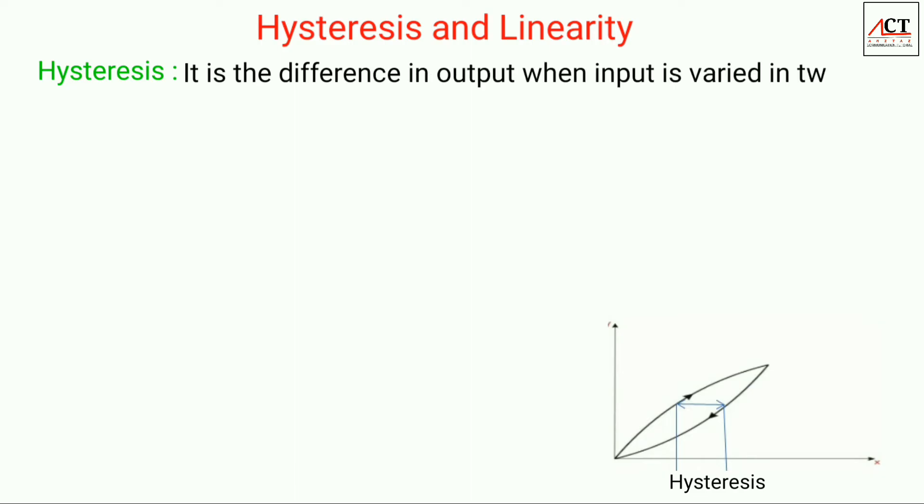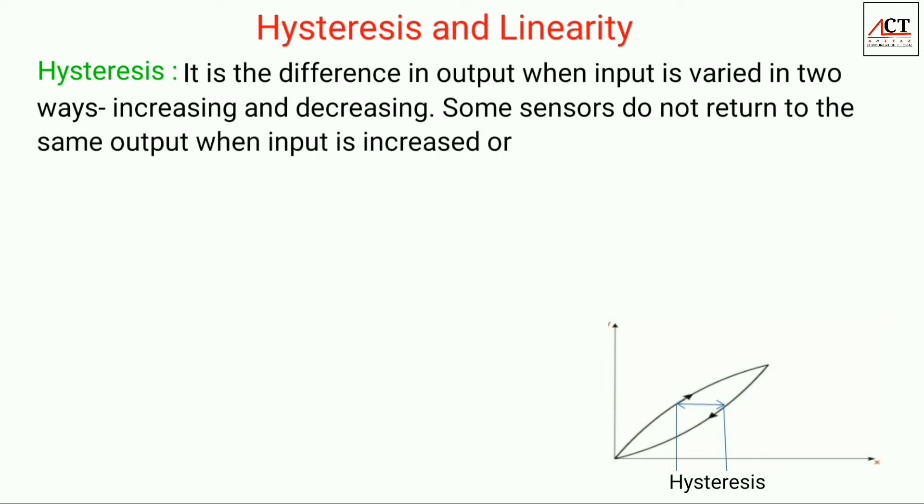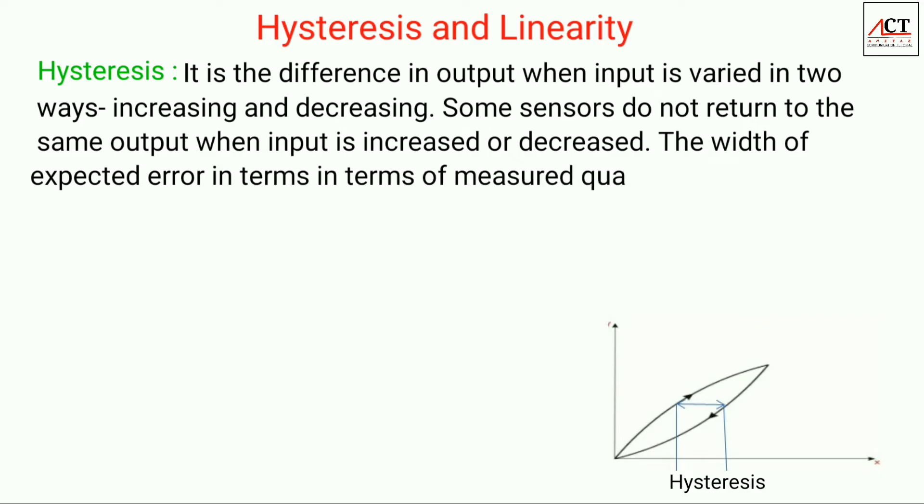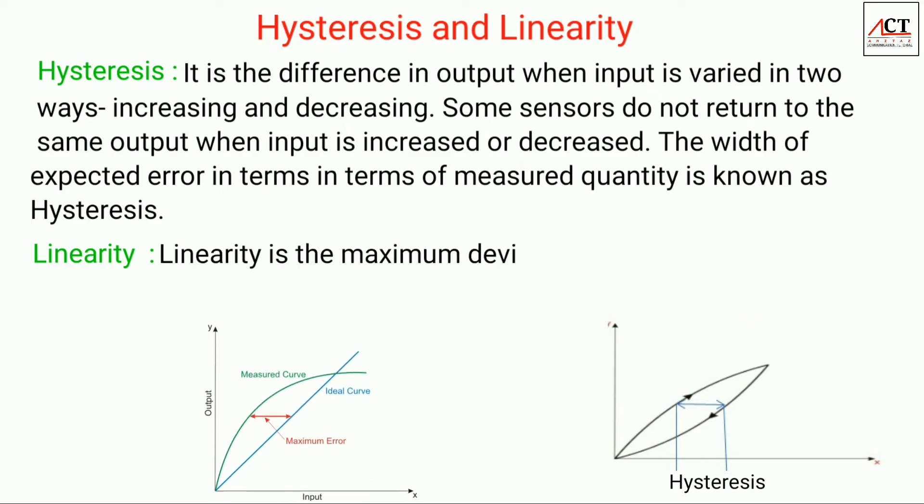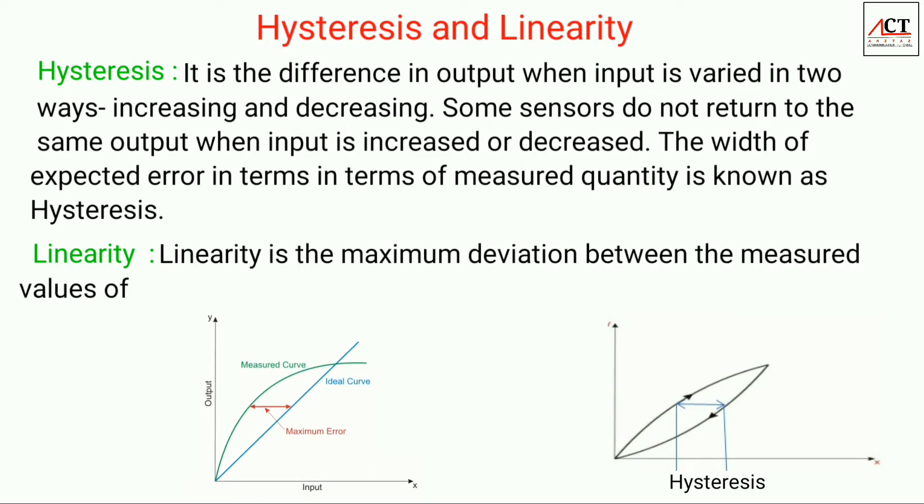The next static characteristic is hysteresis and linearity. Hysteresis is the difference in output when input is varied in two ways, increasing and decreasing. Some sensors do not return to the same output when input is increased or decreased. The width of expected error in terms of measured quantity is known as hysteresis. Linearity is the maximum deviation between the measured value of a sensor from an ideal curve.